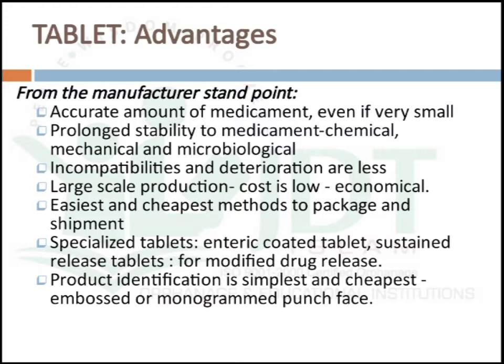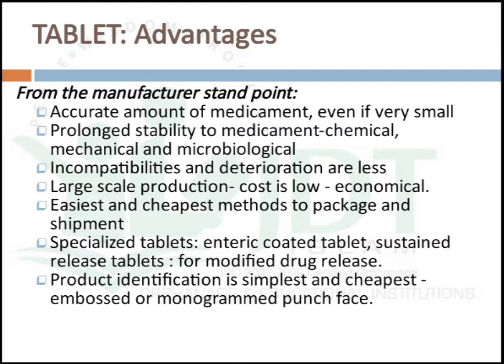Product identification is simplest and cheapest by embossing a monogram on the tablet, so we can identify each unit from a strip. Coming to the disadvantages, drugs with amorphous nature, flocculent, or low density character which resist compression into a dense compact cannot be converted to a tablet formulation.